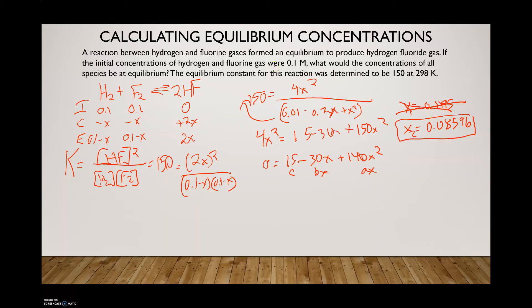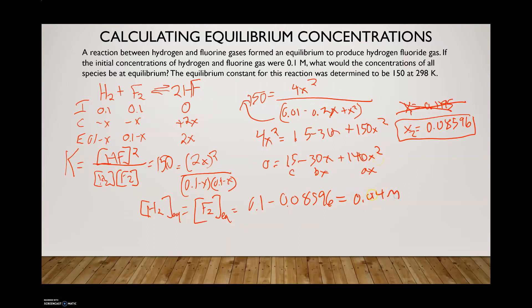Now we calculate the equilibrium concentrations for all species. For H₂ and F₂ at equilibrium, they're both equal to 0.1 minus x, which is 0.1 minus 0.08596, giving a concentration of 0.014 molar. For HF at equilibrium, we do 2 times 0.08596, which gives us 0.17 molar.